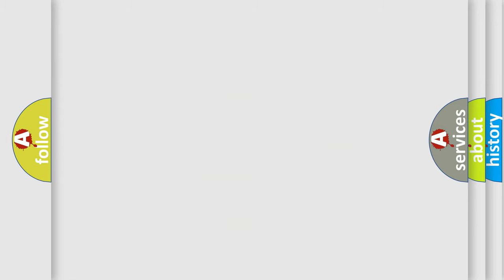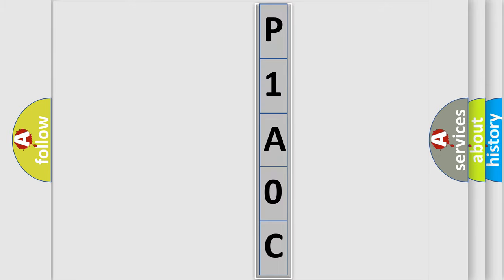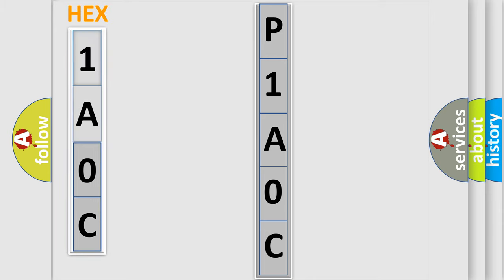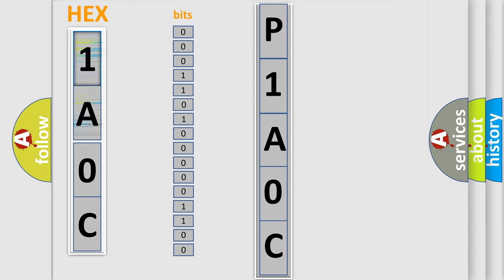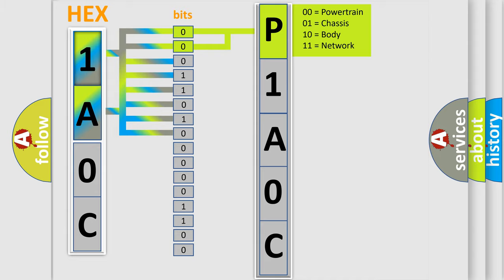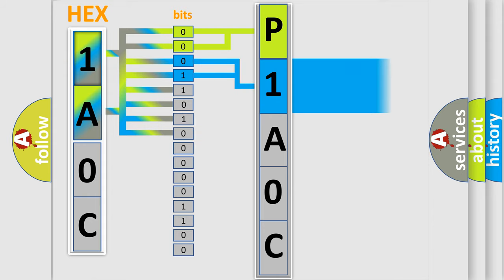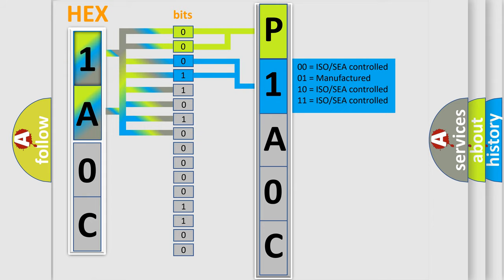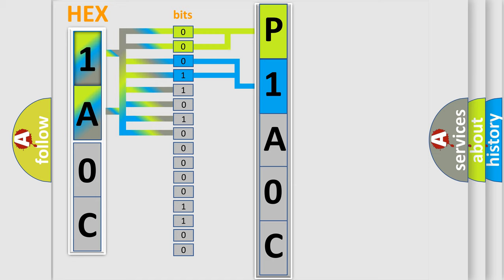The error code is split into two bytes consisting of 16 bits. One bit is the basic unit that each computer works with. The bit has two logical states: zero, low level, and one, high level. By combining the first two bits, the basic character of the error code is expressed. The next two bits determine the second character. The last bit styles of the first byte define the third character of the code.